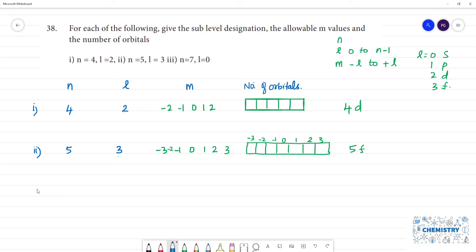Next, third one. n is equal to 7 and l is 0. Now, l value is 0, it is minus 0 to plus 0. So m value is 0. Now, l value 0 is s-orbital, one sub-shell. So the designation is 7s.